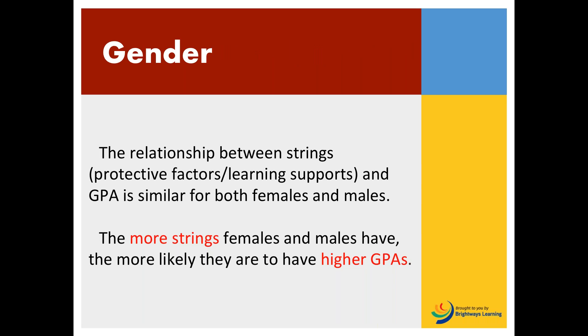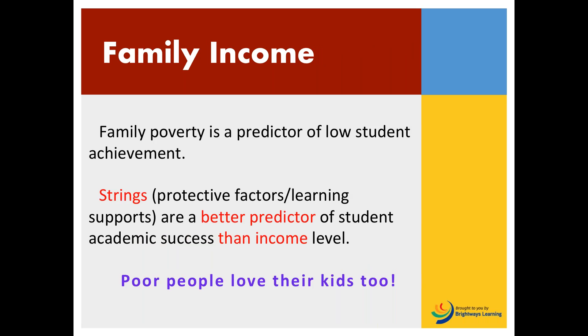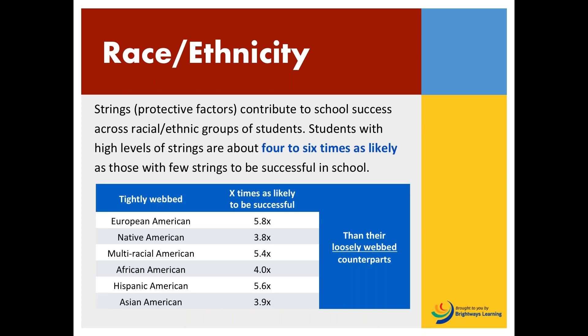For example, the more strings that a female or male have, then the more likely they have to have higher GPAs, regardless of gender. And strings are also a better predictor of a student's academic success than even income level, because poor people love their kids too. And regardless of race or ethnicity, students with high levels of strings are about four to six times as likely as those with few strings to be successful in school.